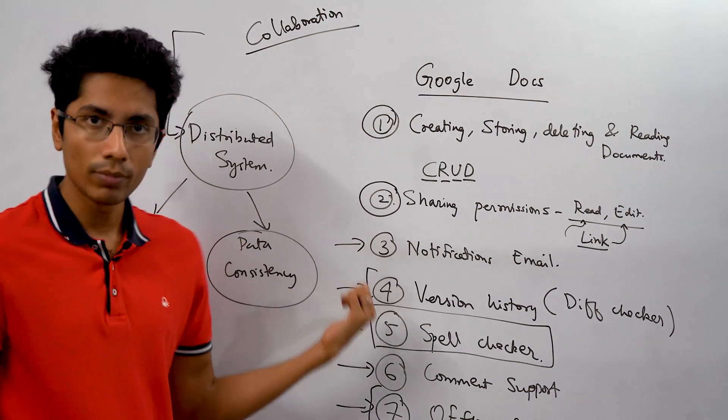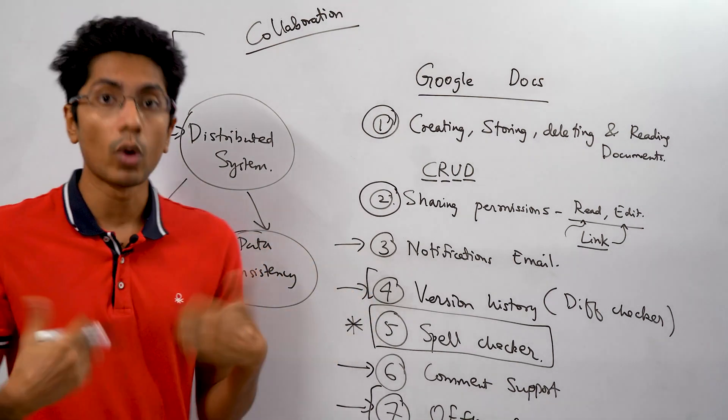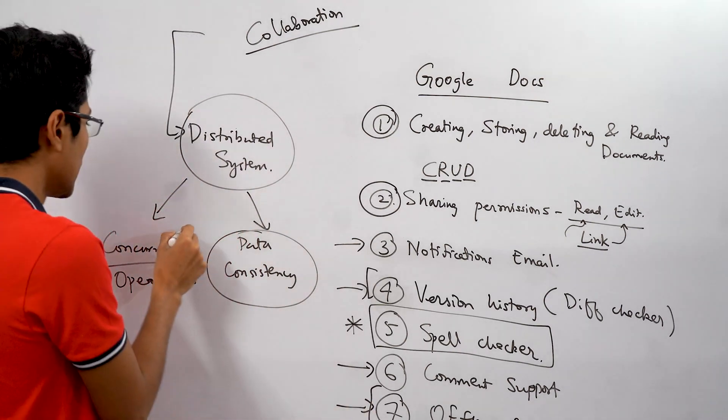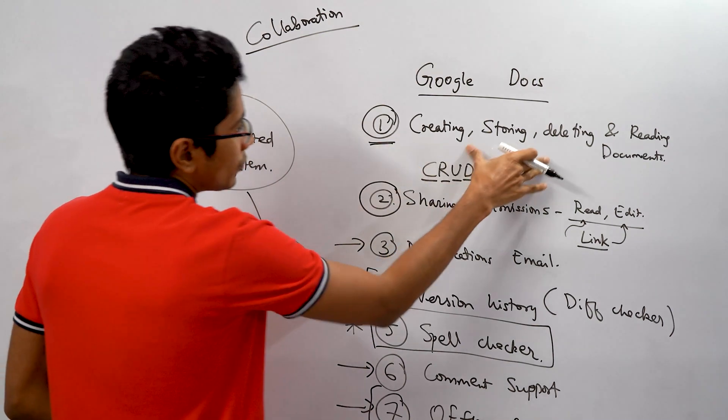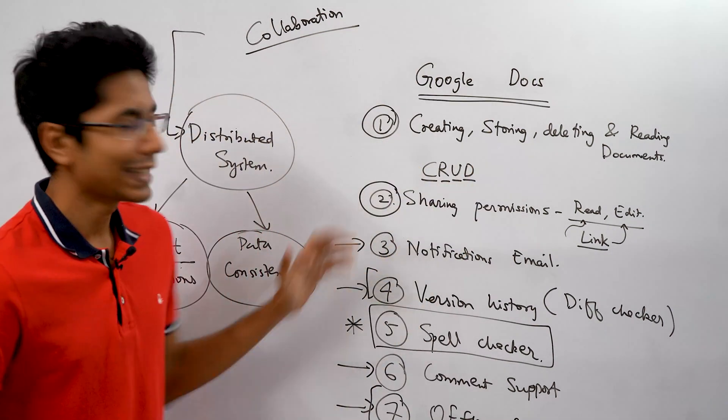If you're going for strong consistency there's some problems. If you're going for a weak consistency what are you going to choose. So these two are the main problems, the core problems that we'll be looking into while targeting Google Docs. Let's see how we can solve this.